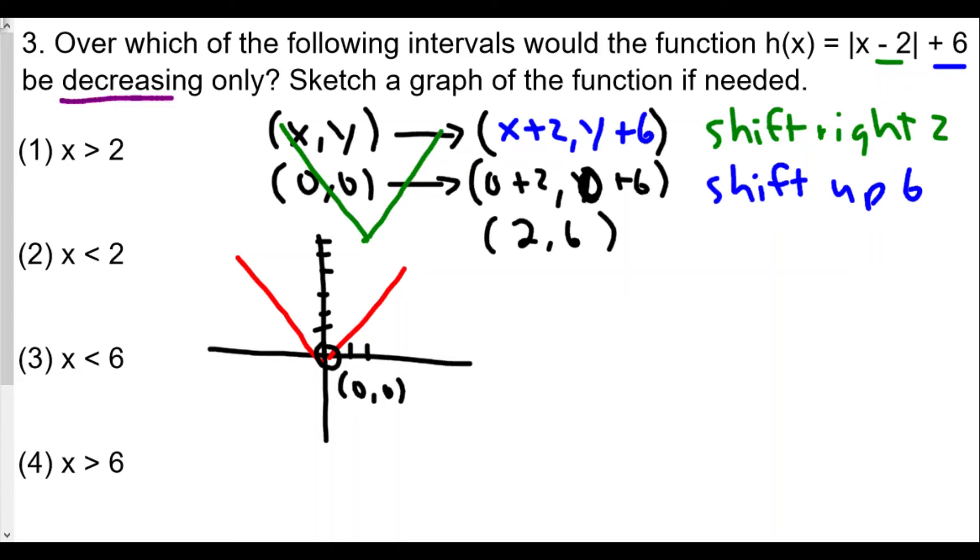The question is asking for which interval would this function be decreasing only. It's decreasing all the way downwards, and we're talking interval over x all the way up to x equals 2. So h(x) is decreasing for all x less than 2.